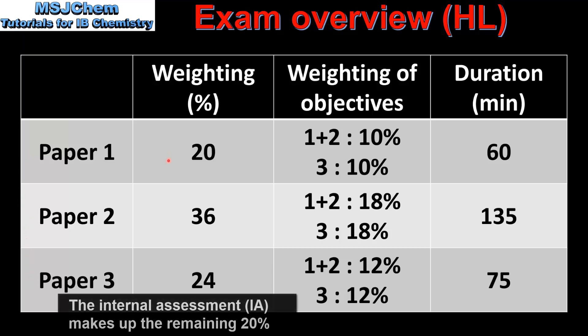The weighting is 20% for paper 1, 36% for paper 2 and 24% for paper 3. If we look at the weighting of objectives we can see there's an equal split between objectives 1 and 2 and objective 3. We'll take a closer look at the assessment objectives in the next slide.